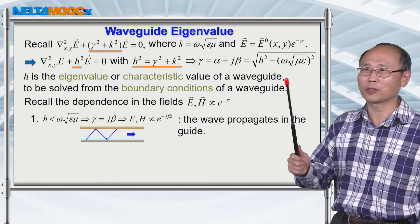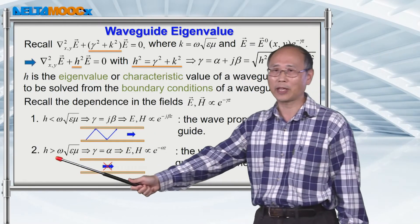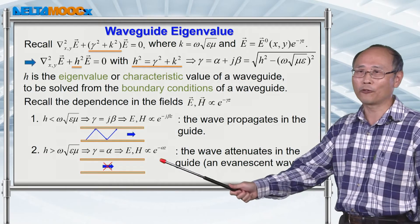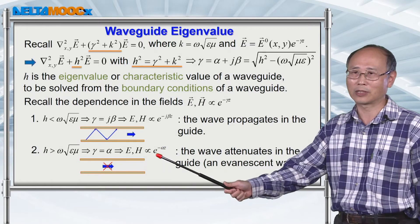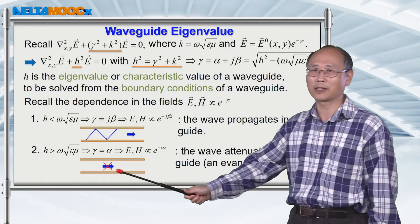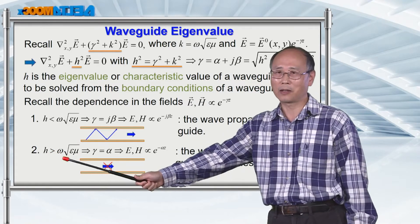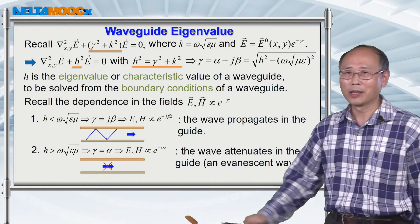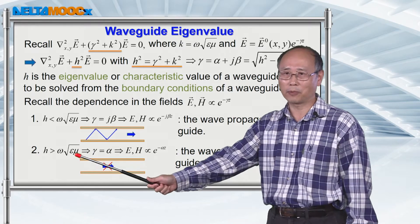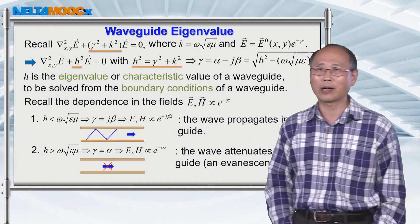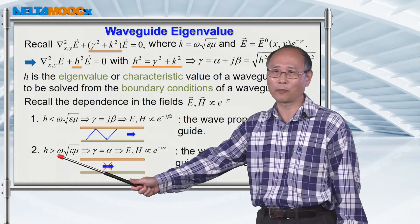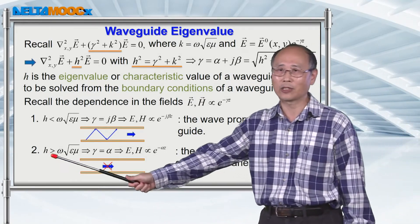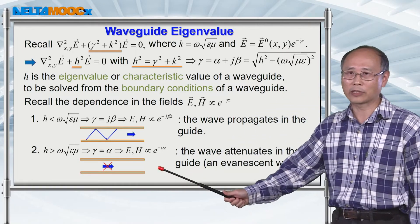If you continue the comparison and h is larger than omega times the square root of epsilon mu, then gamma is a real number and your field is going to attenuate along the z-direction due to the exponential minus alpha z dependence. So if h is larger than omega times the square root of mu epsilon, the waveguide cannot support this radiation inside. Since epsilon and mu are fixed material properties, what you can tune is the frequency. If the frequency is lower than the value defined by eigenvalue h, then the waveguide cannot support such a low-frequency radiation.